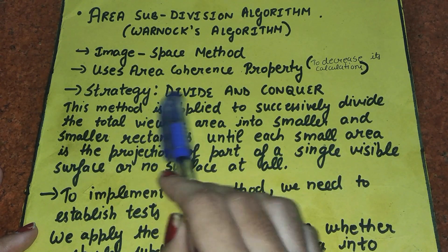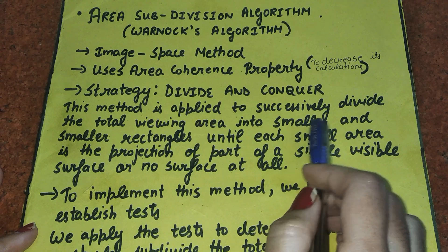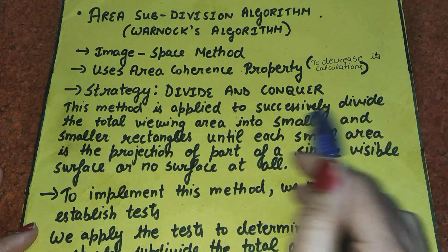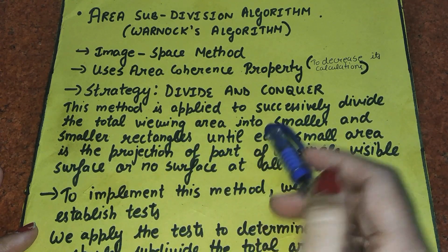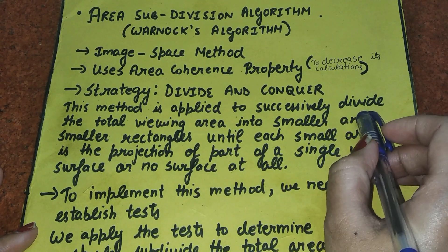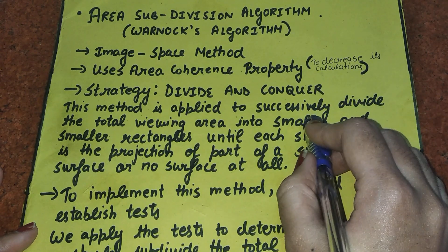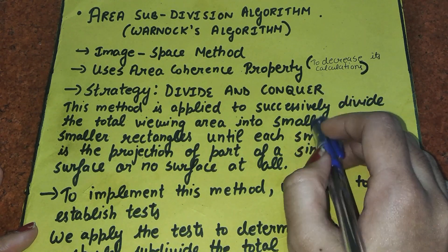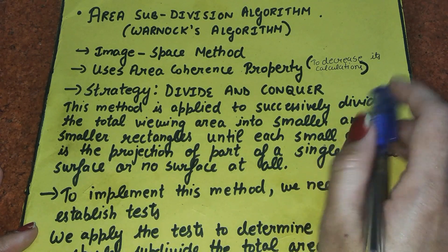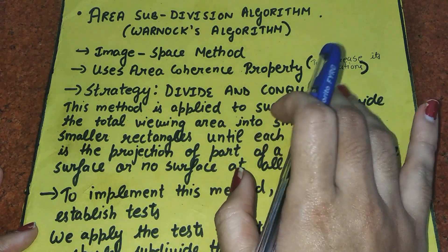What do we mean by the strategy divide and conquer? For example, if we have a rectangular area and there are multiple polygons in it, the figure becomes complex and it becomes difficult to detect the visible surface. So what we do is divide the area into smaller parts in order to decrease the complexity and detect the visible surface more easily.